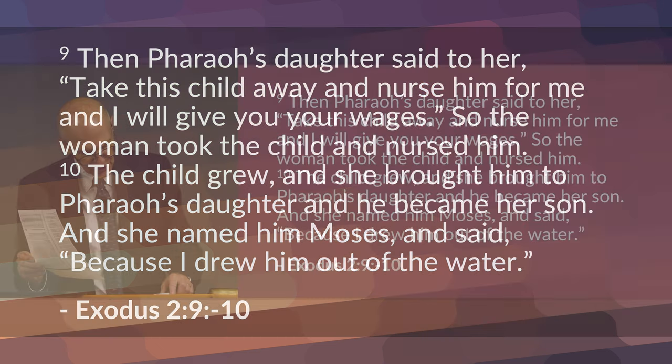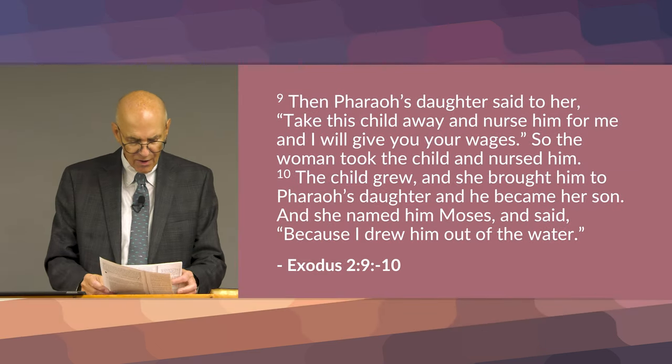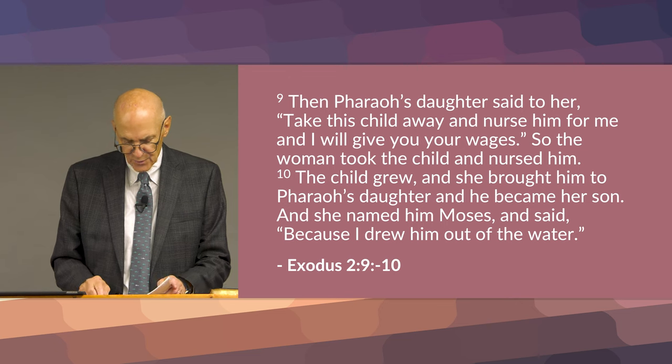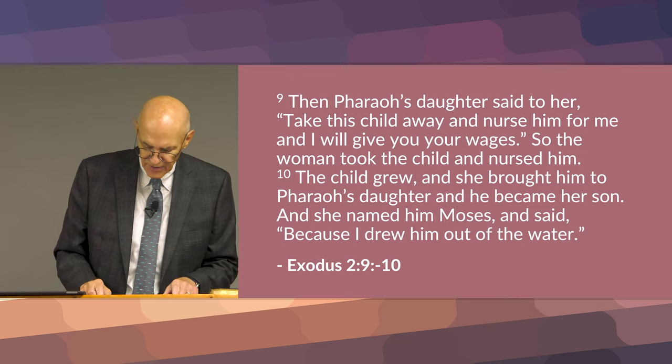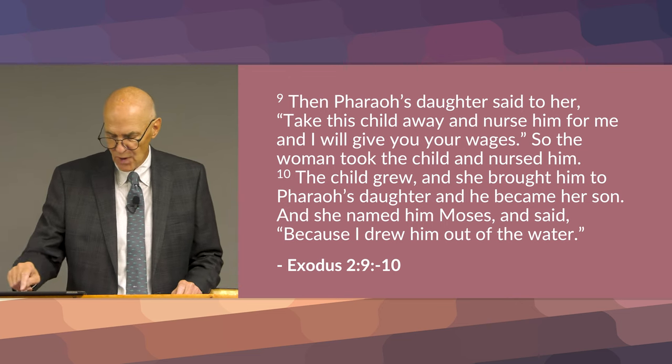Then his sister said to Pharaoh's daughter, shall I go and call a nurse for you from the Hebrew women that she may nurse the child for you? Pharaoh's daughter said, go ahead. So the girl went and called the child's mother. Then Pharaoh's daughter said to her, take this child away and nurse him for me and I will give you your wages. So the woman took the child and nursed him. The child grew and she brought him to Pharaoh's daughter and he became her son. And she named him Moses, saying, because I drew him out of the water.